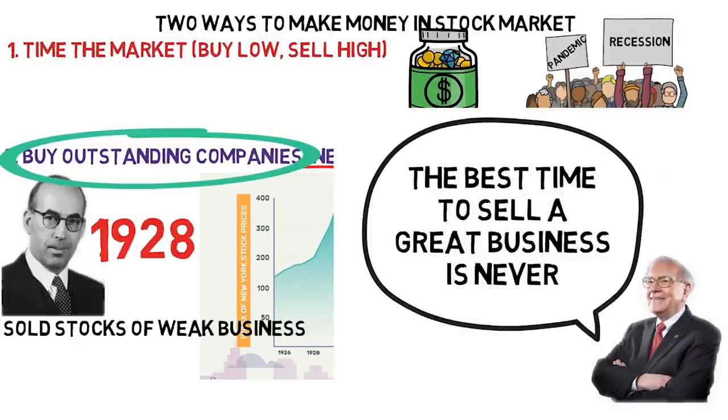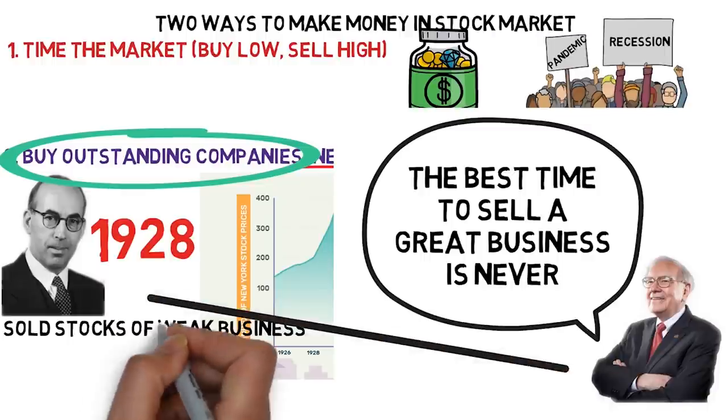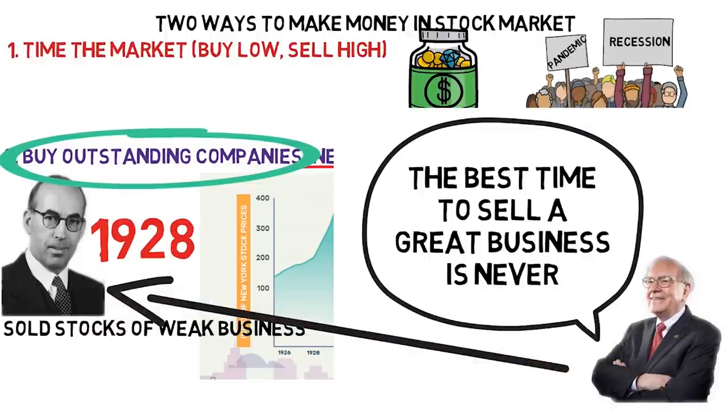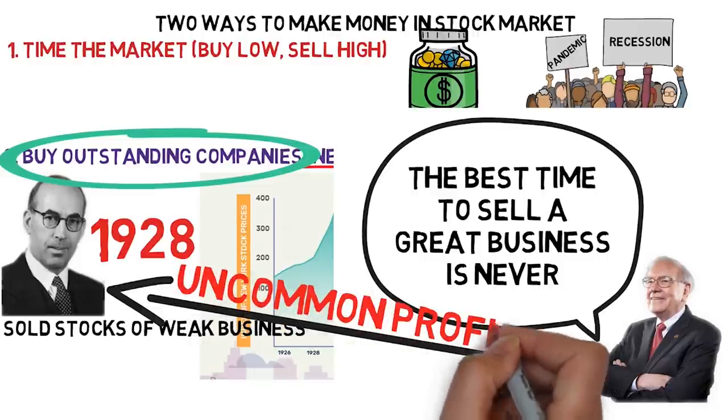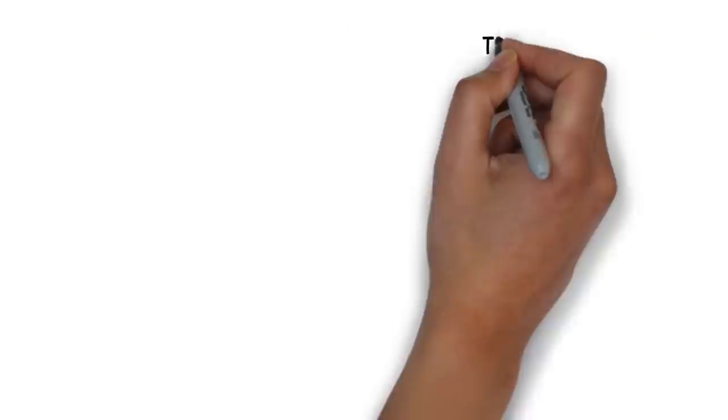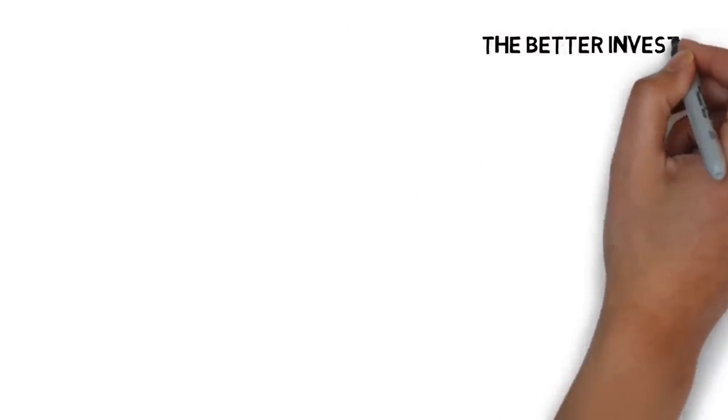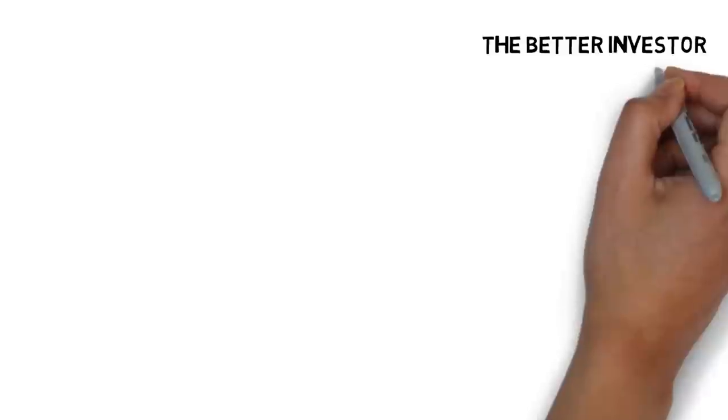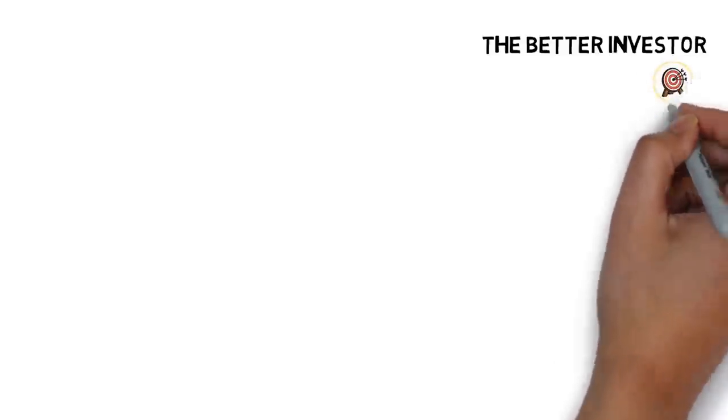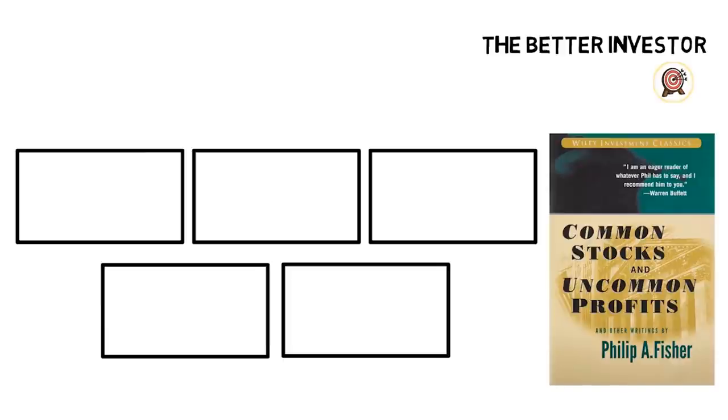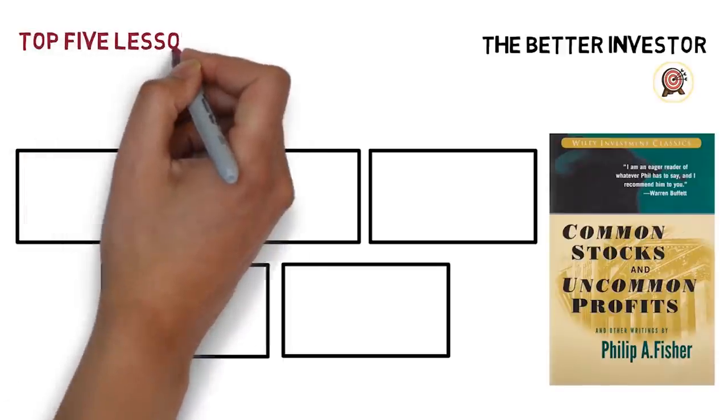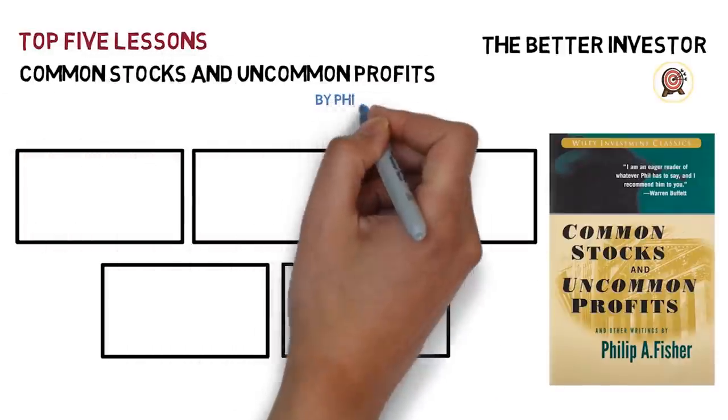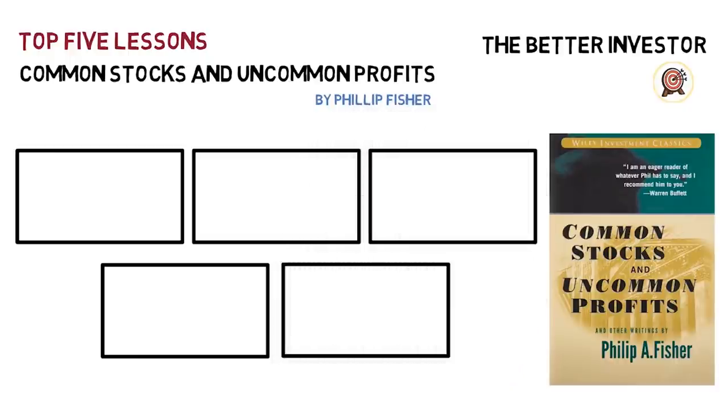If Warren Buffett, as he said, makes investing on the principles of Phil Fisher, let's see what they are and how these can help us to make uncommon profits on our investments. This is The Better Investor, helping you achieve your financial goals and freedom through organizing your finance, stock market investing, and learning from billionaires. And these are top five lessons from the book Common Stocks and Uncommon Profits written by Phil Fisher.